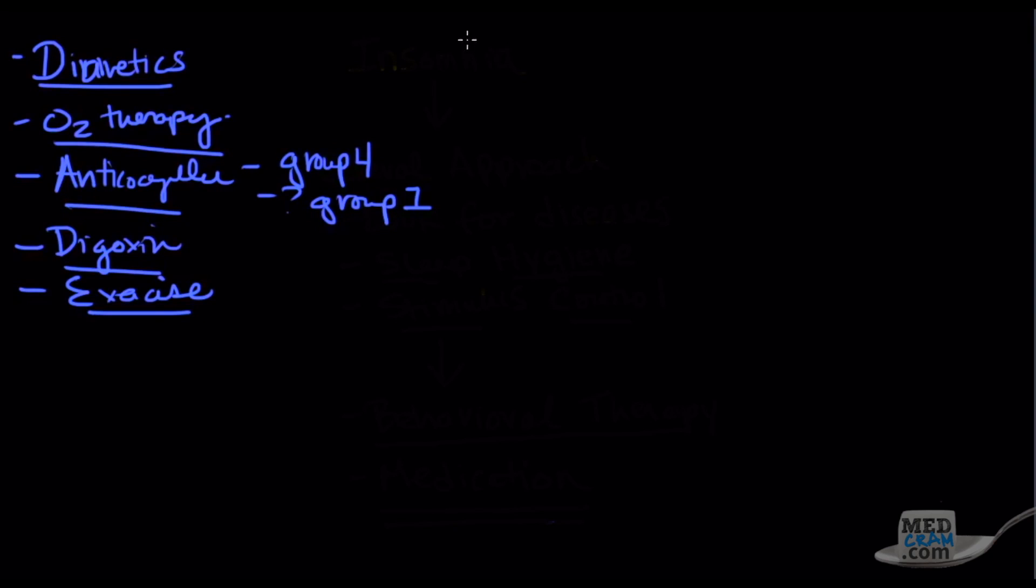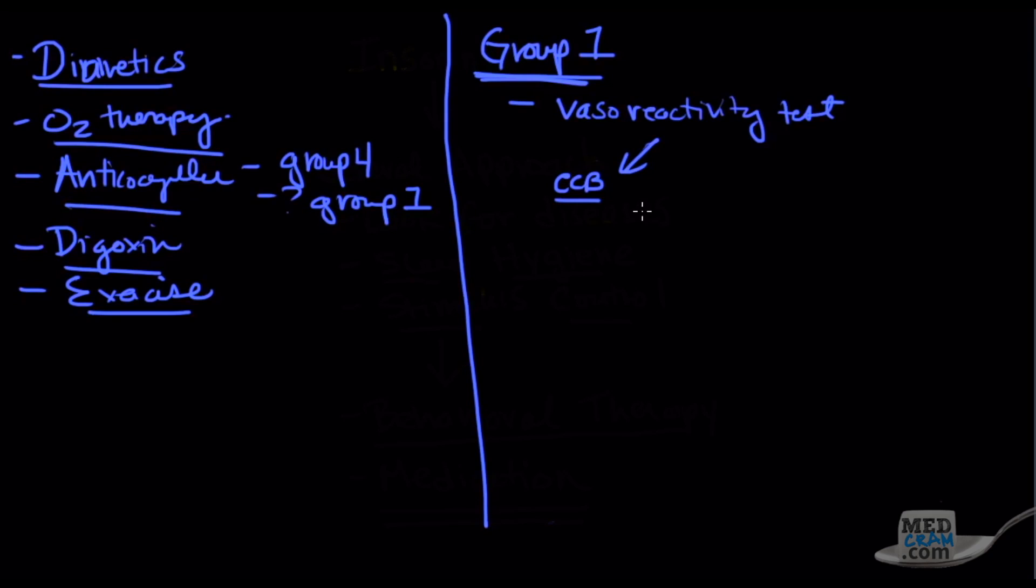Let's talk about group one now and the different classes. Before we start with the advanced medications that some of you are familiar with, we have to do something called a vasoreactivity test. The reason why we do this is because those who respond to the vasoreactivity test are more likely to respond to ordinary medications like calcium channel blockers, like the dihydropyridines and diltiazem. So if they respond, if that's a positive response, calcium channel blockers. If it's negative, then we go on down to the more advanced medications.